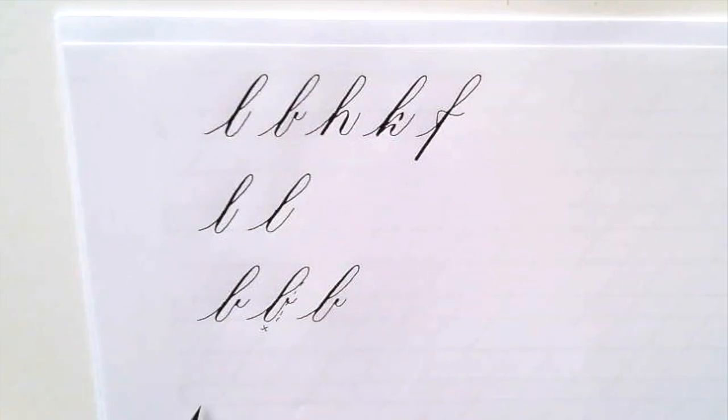The H is going to be the in-stroke, the overturned loop. Again, come out a little bit over and stop, square off that bottom, and then add a compound curve coming all the way up to the waistline again, with that hairline exit stroke.